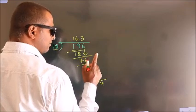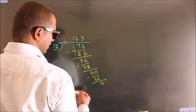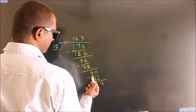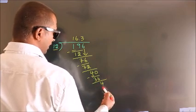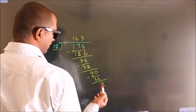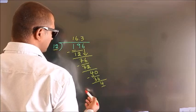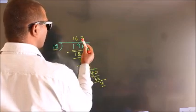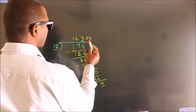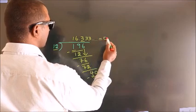Now you observe. Here we had 4, and we got 4 again. That means this number keeps on repeating. So this is our quotient.